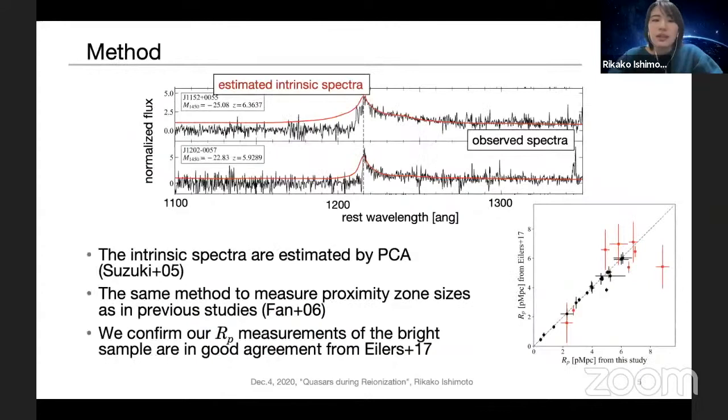Let me explain the method to measure proximity zone. The intrinsic spectra for calculating the transmission are estimated by principal component analysis, PCA. We used the principal components from Suzuki et al. 2005. The examples of the spectra are shown in this figure. Although we used different principal components from those used in Eilers et al., our measurements of the bright sample are in good agreement with those in Eilers et al. shown in this figure, except for some quasars with updated redshift showing the red points. The definition of the proximity zone is the same as used in the previous studies.